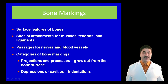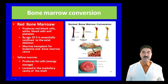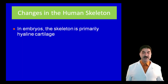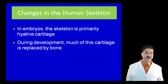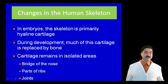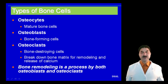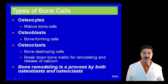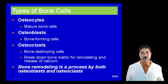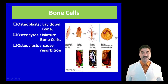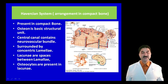Bone markings are surface features of the bones representing sites of attachment of muscles, tendons, and ligaments, as well as passages for nerves and vessels. Categories include projections or processes, which grow out from the bone surface, and depressions or cavities, which are indentations on the surface. There are three types of bone cells: osteocytes (mature bone cells), osteoblasts (bone-forming cells), and osteoclasts (bone-destroying cells), which break down bone matrix for remodeling and release of calcium. Bone remodeling is performed by both osteoblasts and osteoclasts.